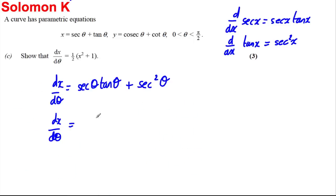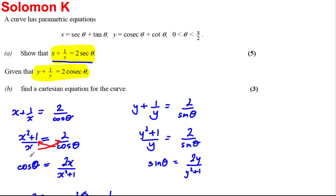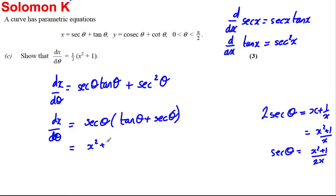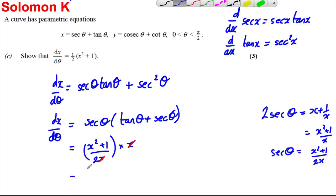We can factorise out sec θ to get sec θ(tan θ plus sec θ). From part A, 2 sec θ equals (x² + 1)/x, so sec θ equals (x² + 1)/(2x). Also, sec θ plus tan θ equals x. Substituting in: [(x² + 1)/(2x)] times x — the x's cancel — giving dx/dθ equals ½(x² + 1), as required.